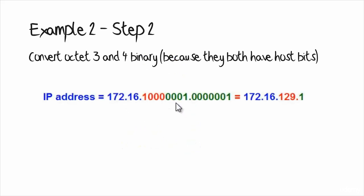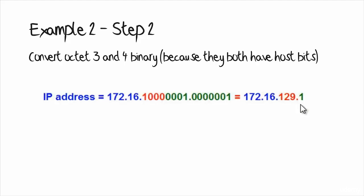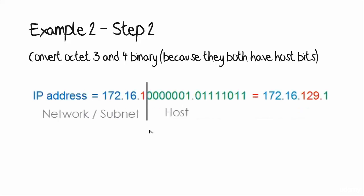You need to convert the third and fourth octets into binary. There's no need to convert the first two octets as they are entirely part of the network or subnet portion. You only convert the host portion into binary. In binary, 1 followed by six 0s followed by 1 equals 129 in decimal. Seven 0s followed by a binary 1 is the binary equivalent of 1 in decimal. So 172.16.1 is the network or subnet portion, and the remaining bits are the host portion.